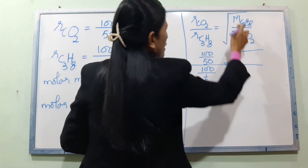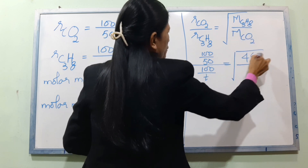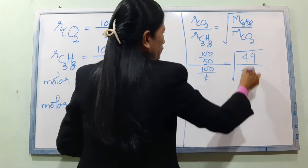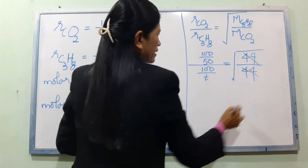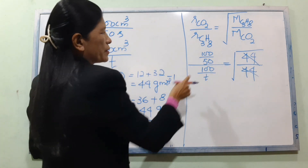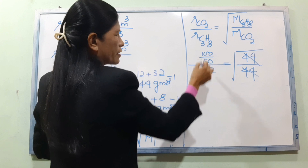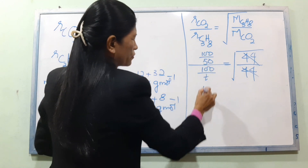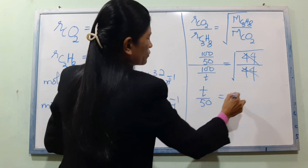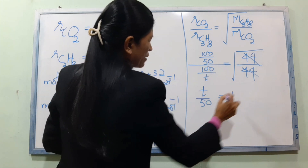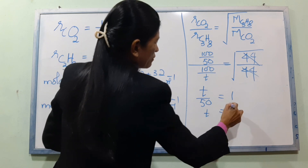The molar mass of C3H8 is 44. We can solve it the same way using Graham's Law. T1 is equal to 50 seconds.